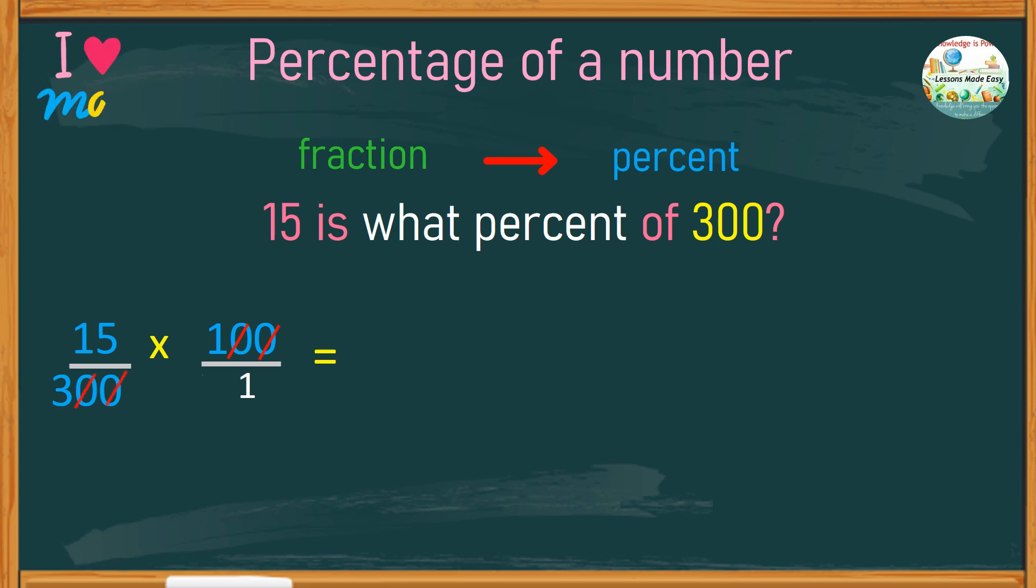So, we now have 15 over 3, or 15 divided by 3, which is a very small number to work with. And obviously, the answer is 5. So, 15 of 300 is 5%.